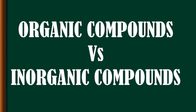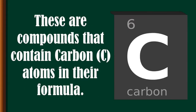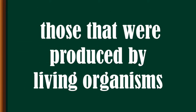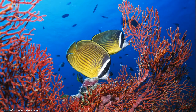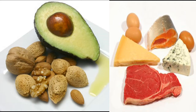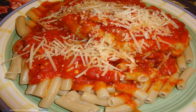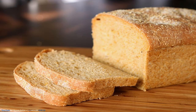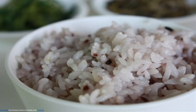Organic compounds are compounds that contain carbon atoms in their formula — those that were produced by living organisms, including fats, lipids, and proteins, and carbohydrates such as the food we eat like bread, rice, and pasta.